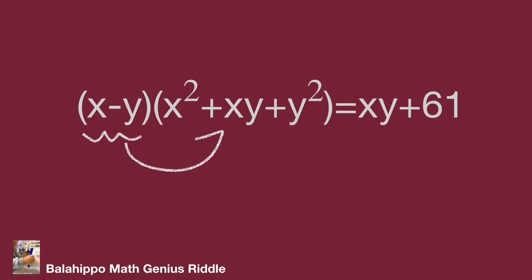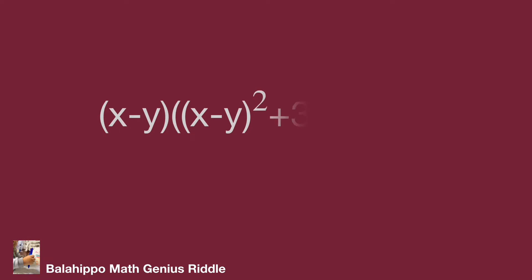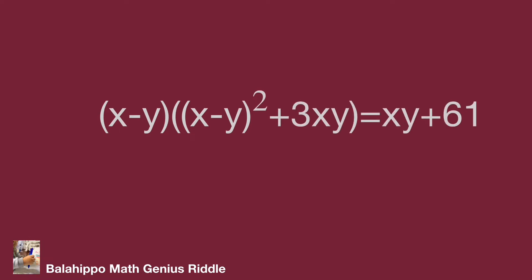We have the first factor (x minus y). Next, I'm going to generate the x minus y factor in the second quantity. Divide the second quantity: split x times y into minus 2xy and plus 3xy. Then x squared minus 2xy plus y squared equals (x minus y) squared. So we have the quantity (x minus y) multiplied by the quantity (x minus y) squared plus 3xy, equal to xy plus 61.